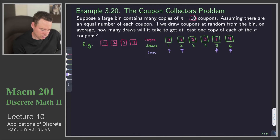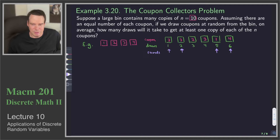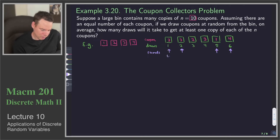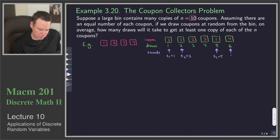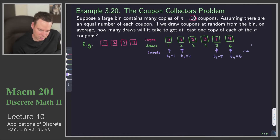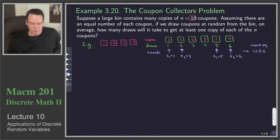These milestones are what we're going to call the records — when new coupons appear. We got the first new coupon on the first step, the second new coupon on the second step, the third new coupon on the fifth step, and the fourth new coupon on the sixth step. So our record sequence is 1, 2, 5, 6. That says I got my first coupon on draw one, my second new one on draw two, my third new one on draw five, and my fourth new one on draw six.